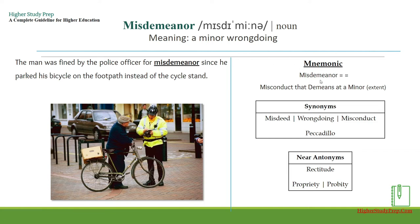The mnemonic for 'misdemeanor': break it down as 'misconduct at a minor extent.' Synonyms include: misdeed, wrongdoing, misconduct, or peccadillo. Antonyms could be: rectitude, propriety, or probity.